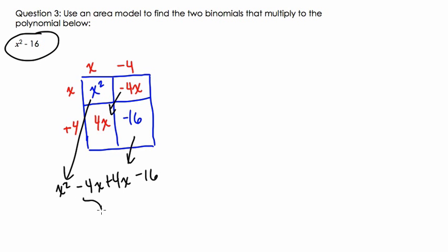Why? Negative 4x plus 4x, that's 0x. We still have x squared minus 0x minus 16. Well, minus 0x is just 0, so we have x squared minus 16. So, this checks out. We've got the right area.